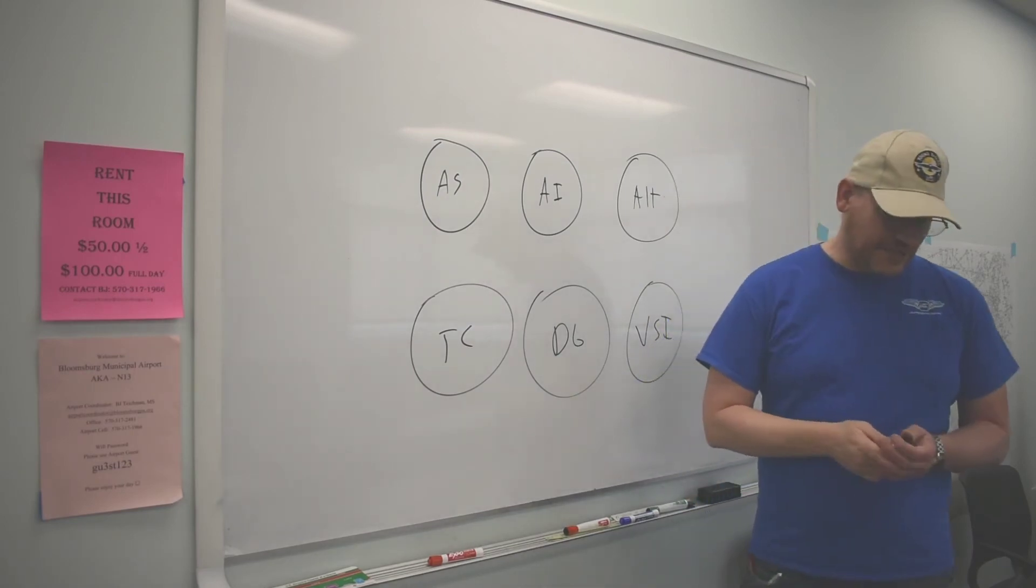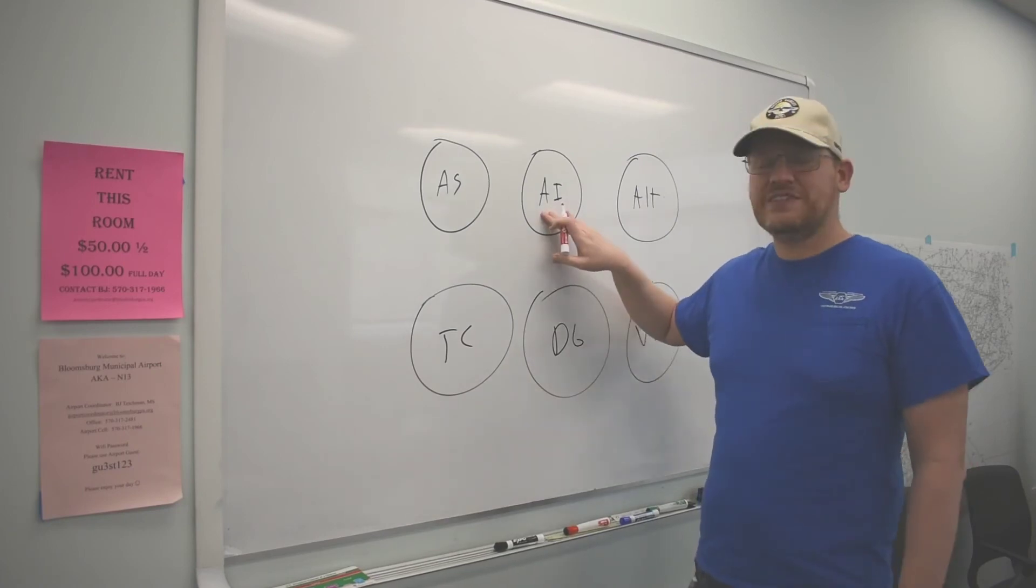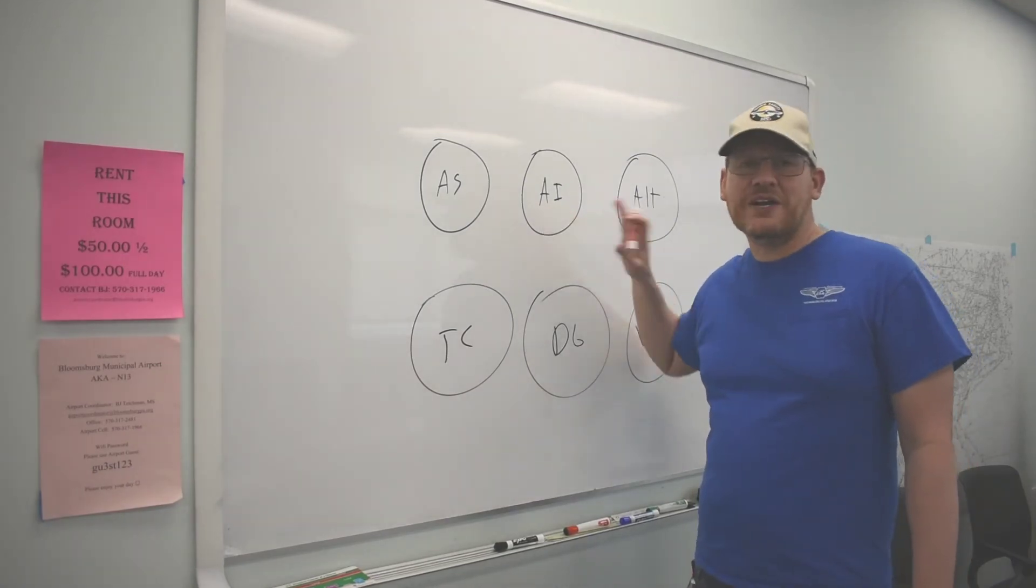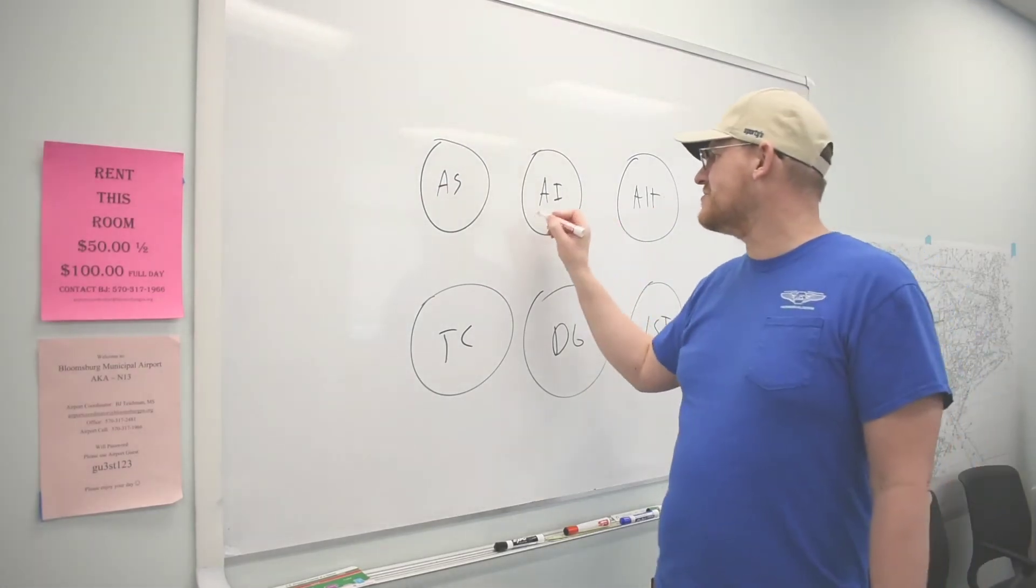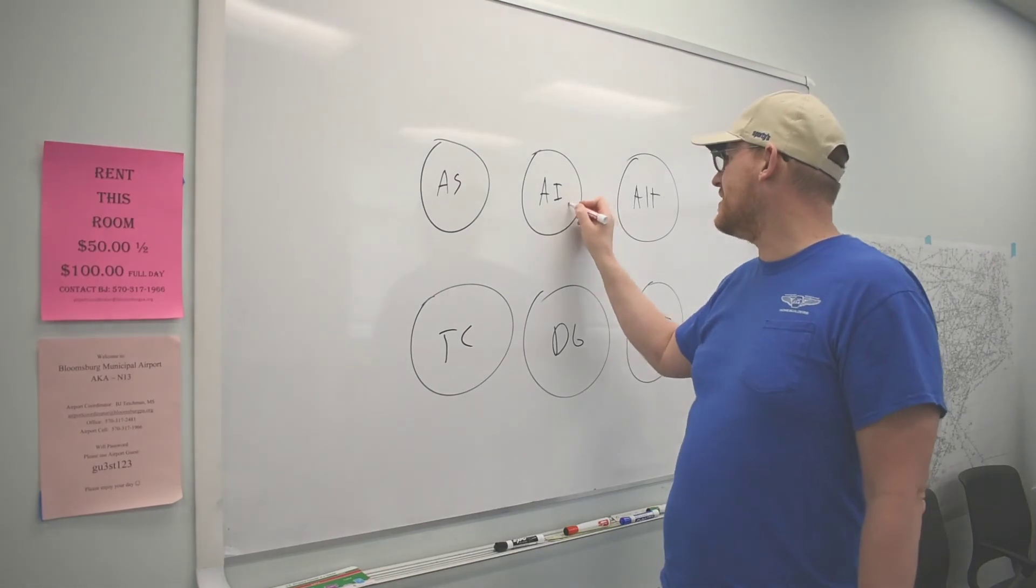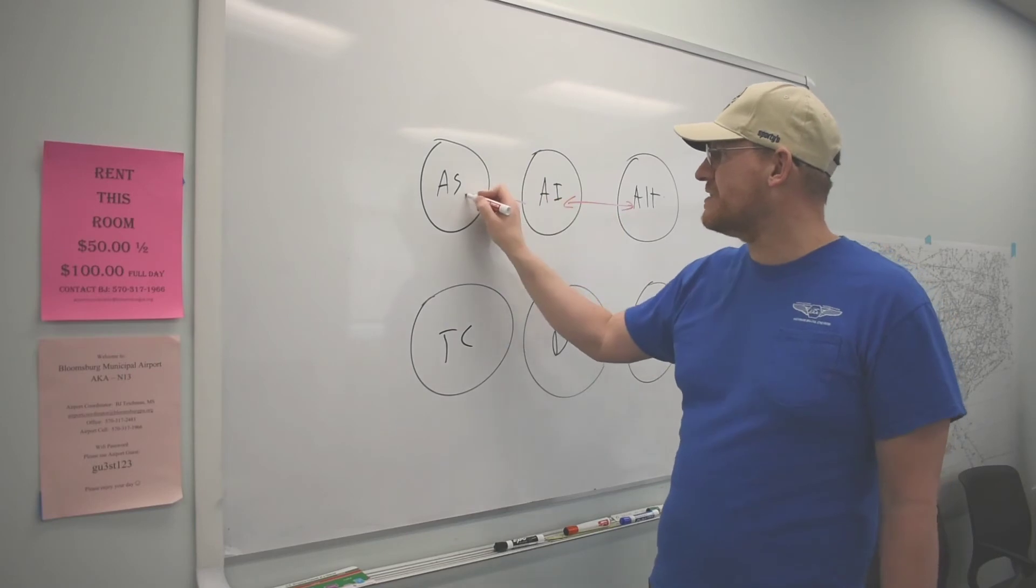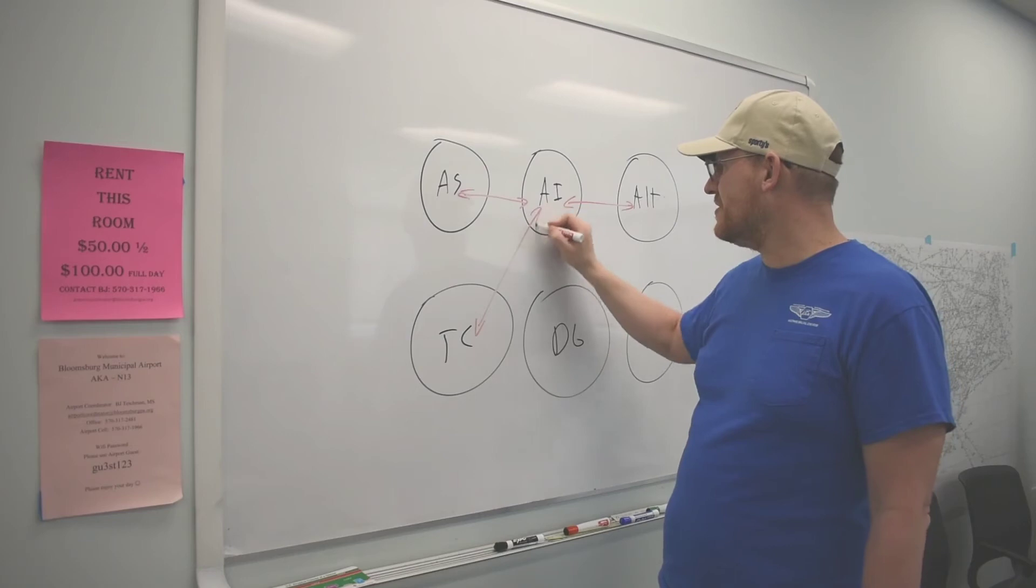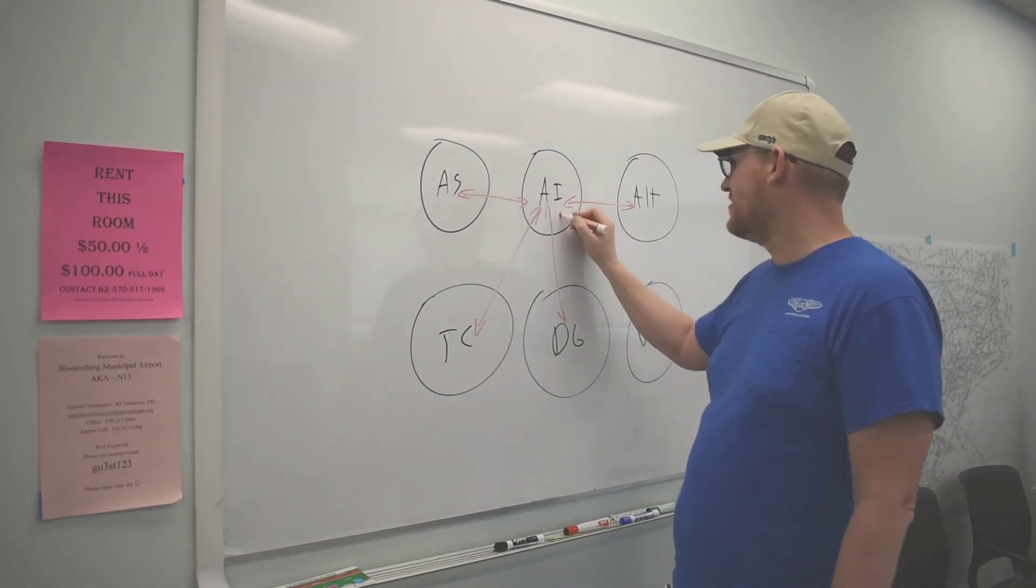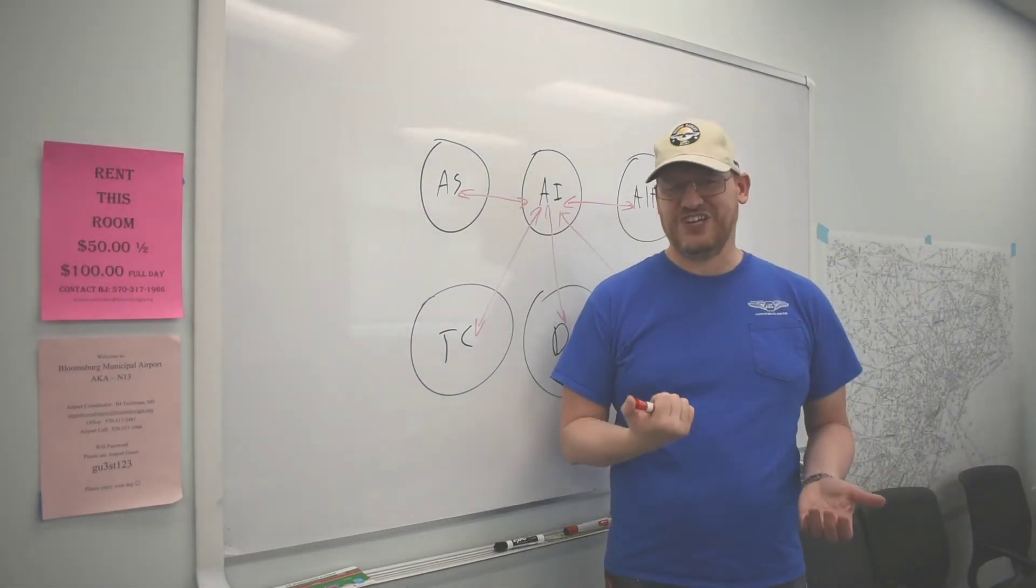A very common scan is what we call a radial scan. And it's very simple. We center on the attitude indicator. Why do we center on this? Because this provides us a lot of information. So I'm going to look at my AI. And I'm like, I'm trying to be straight and level. How's my altitude? Back to my AI. How's my airspeed looking? Back to here. Turn coordinator. Okay, it looks good. Directional gyro. Back to here. VSI. Back to here. And that's a very common scan. It's called a radial cross-check scan.